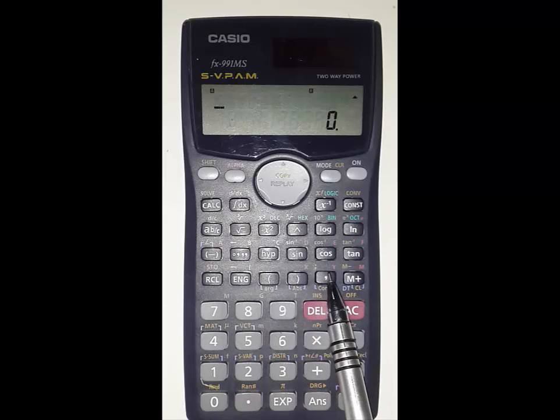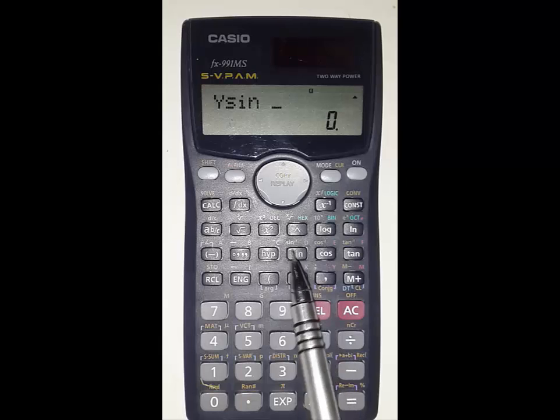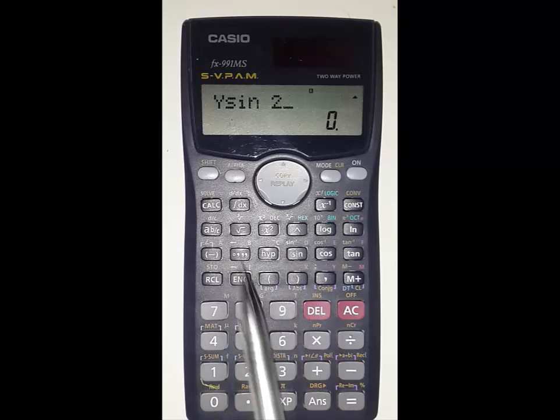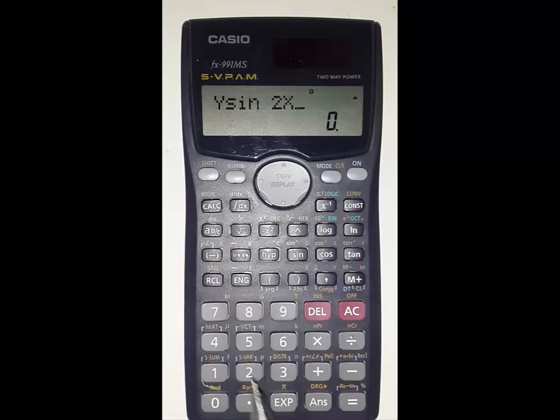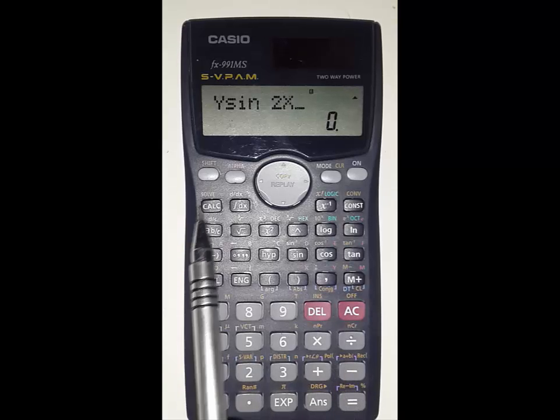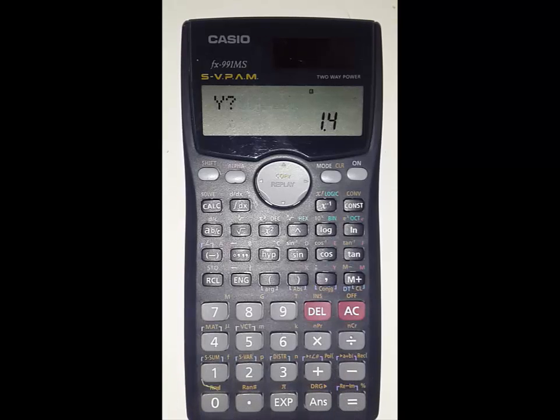You can also do for Y sin 2x. Alpha Y, sin 2, alpha X. This formula is fixed. Now we can press this calculate. Just substitute Y value, 1.4, equal to X value, pi divided by 3. So it gives your Y sin 2x. This is how we work with simple calculation. Thank you.